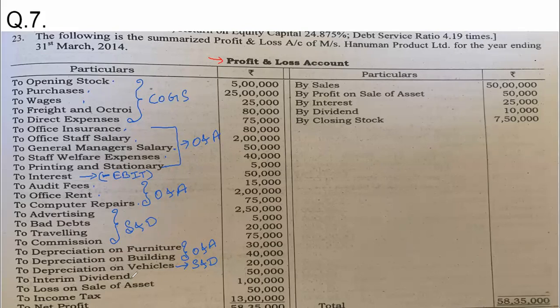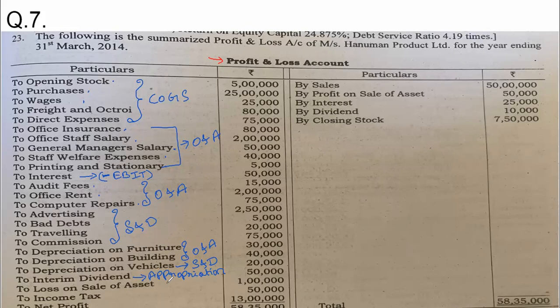Interim dividend is given. For dividend, if you see the format, at the end under appropriation we minus it — when the full profit is calculated, we start distributing it: give dividend, transfer to reserves. So there we will be deducting it, and we are taking the interim dividend under appropriation.